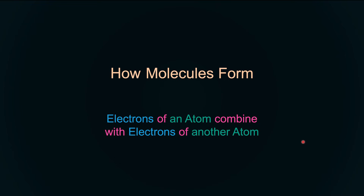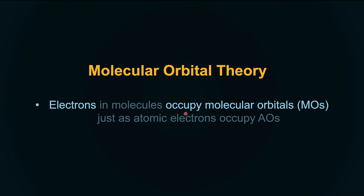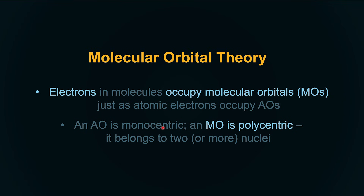Hybridization beautifully gives a sense of geometry, but it does energy predictions quite erroneously and it works only for the main block elements. Whenever we ask how molecules form — how electrons of one atom combine with electrons of another atom — electrons are always associated with the atom. But that's what we're going to change in molecular orbital theory.